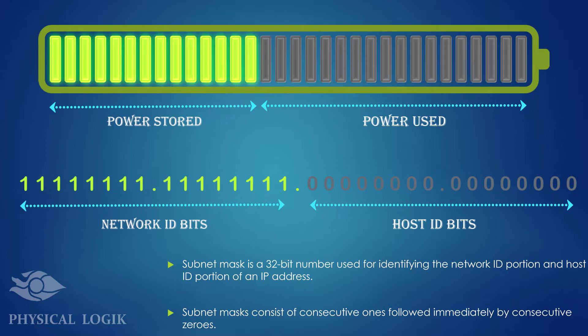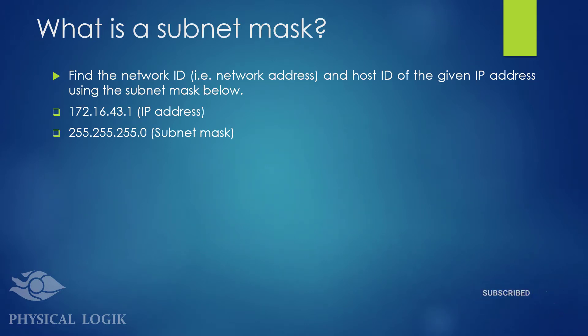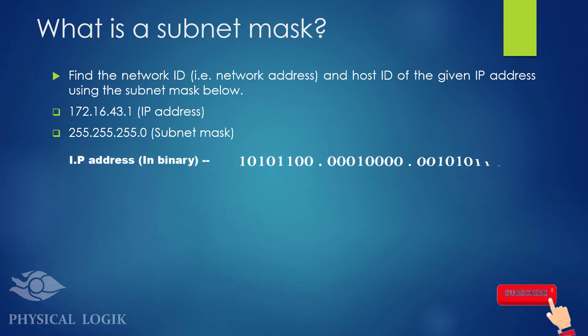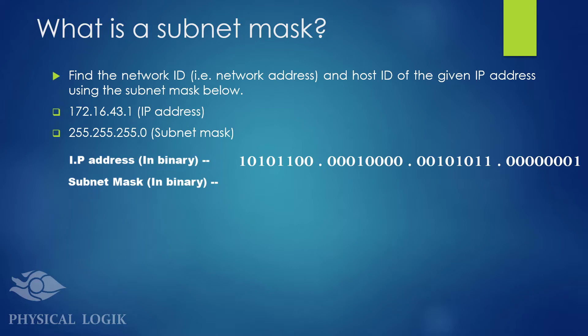But how is this subnet mask applied to an IP address? Assume the IP address 172.16.43.1 is configured on a device and we were to extract the network and host ID that can be used to describe the device's location. We first convert this to binary form. Let's assume that the subnet mask given consists of only the first 3 octets filled with 1s.